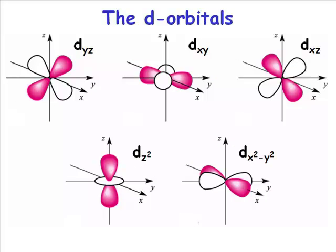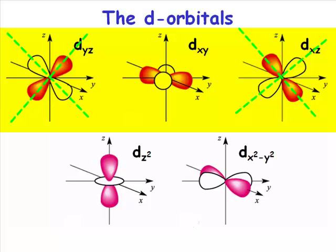So the d-orbitals fall into two main classes. They fall into the class of orbital that lies between the axes. So here we have dyz, dxy, and dxz. Those orbitals are lying between our set of atomic coordinate axes that we've defined.